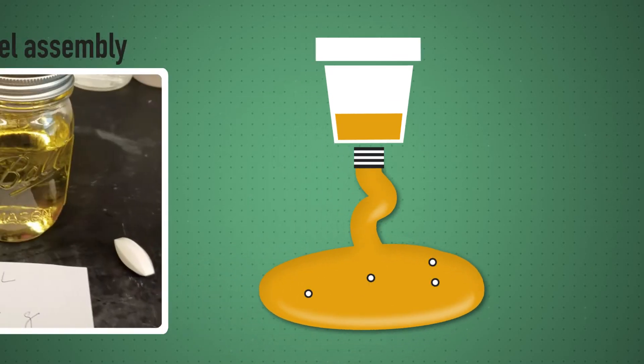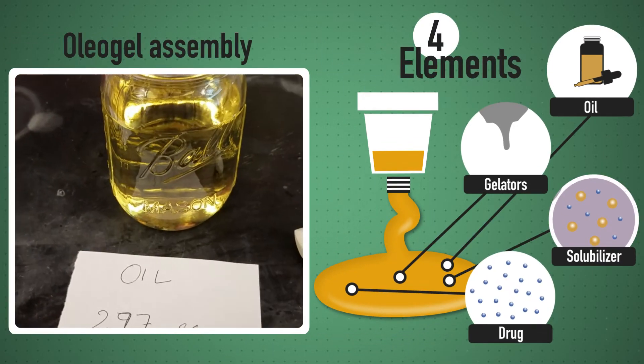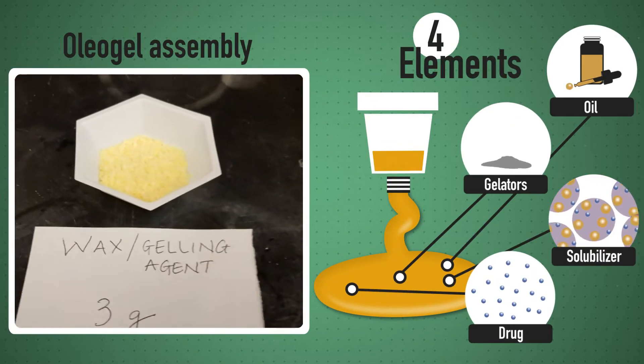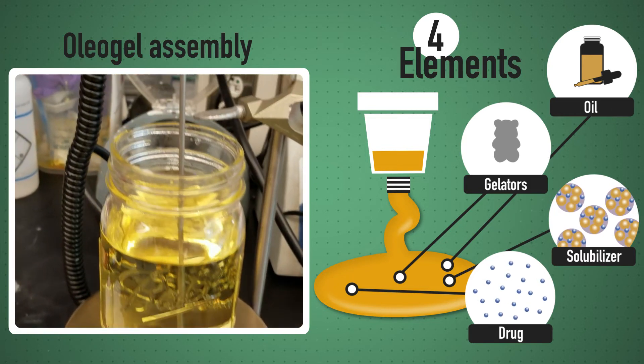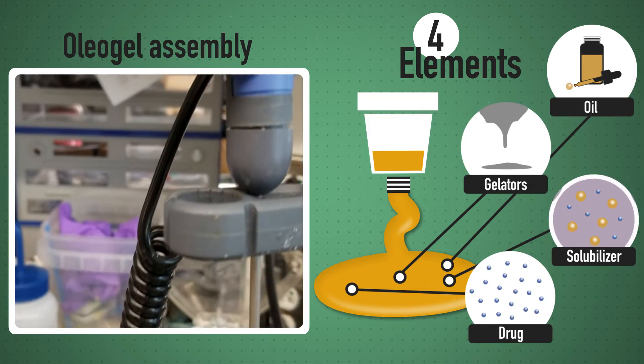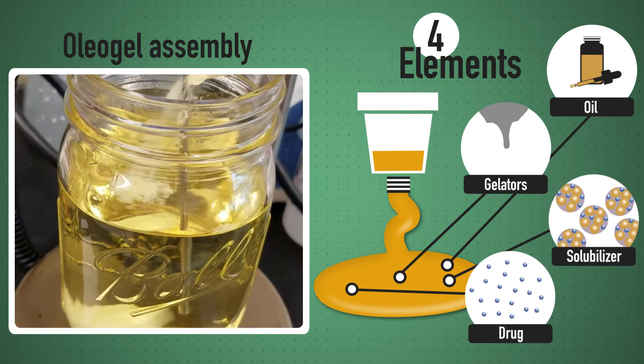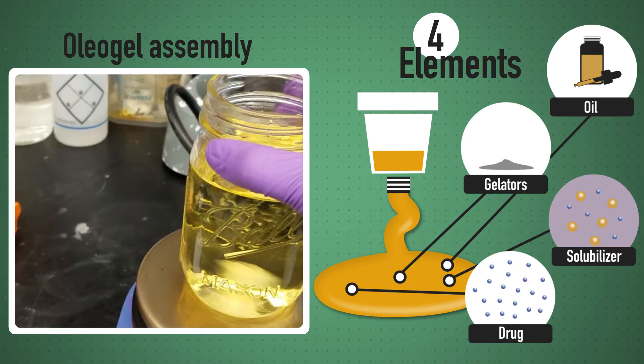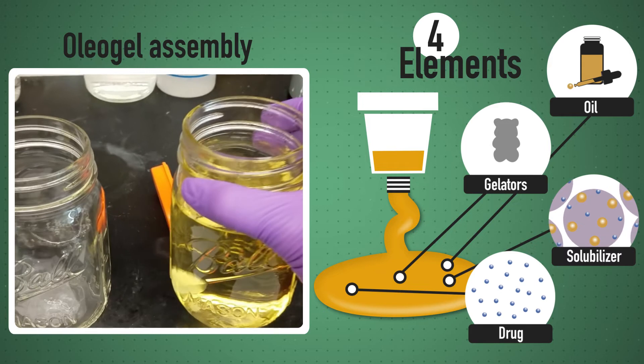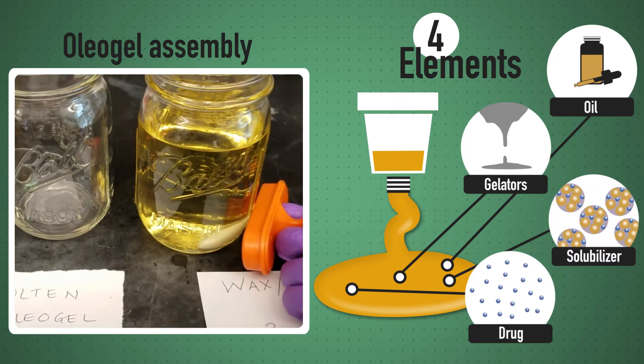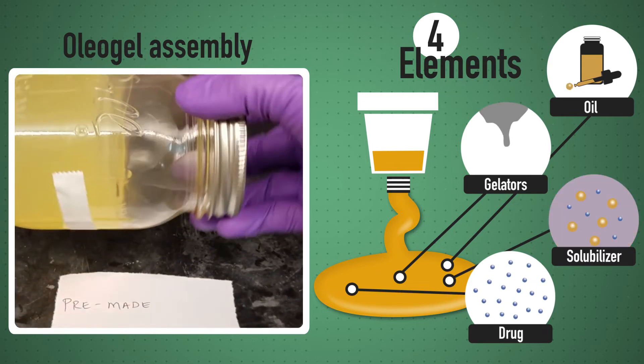The oleogel platform is composed of four elements: oils which make up the bulk of the system, gelators which are used to modulate the consistency across a very broad range from syrup-like to thick pudding and even gummy-like consistencies, and solubilizers to enhance the interactions with drugs and the oils in the drug itself.